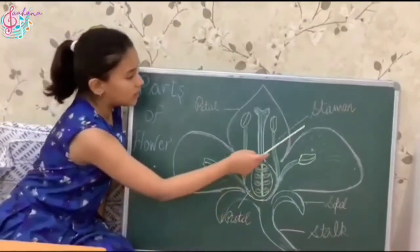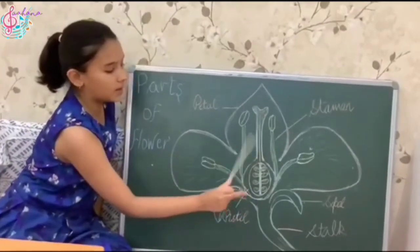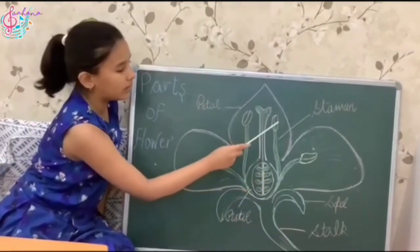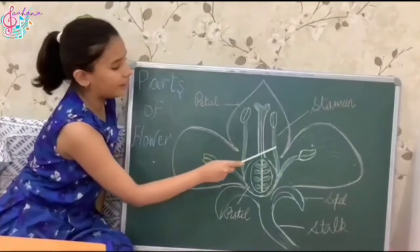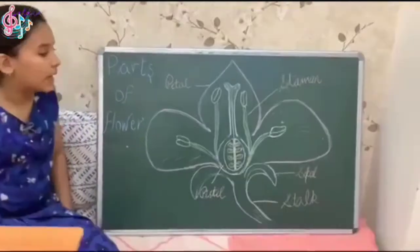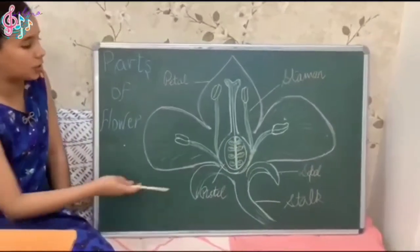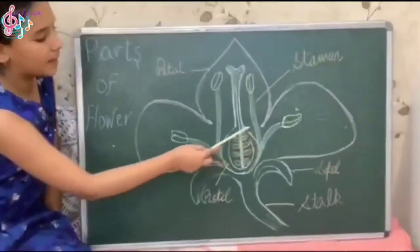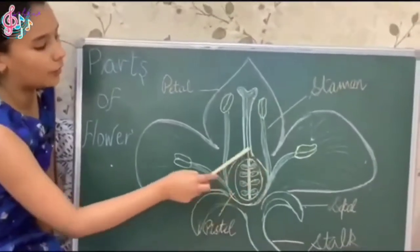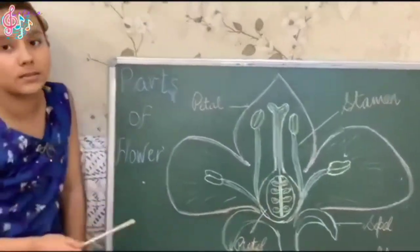Stamen contains two parts: anther and filament. Tiny granule-like structures present in the ovary are called ovules.